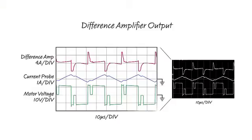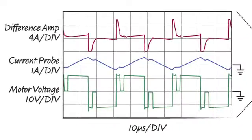In the scope photo shown here, I show the diff amp output set to 4 amps a division, a current probe output set to 1 amp a division, and the motor voltage set to 10 volts a division. The current probe is meant to be an impartial measure of the motor current. Looking at the performance of the diff amp, the output is almost unrecognizable when compared to the actual motor current.